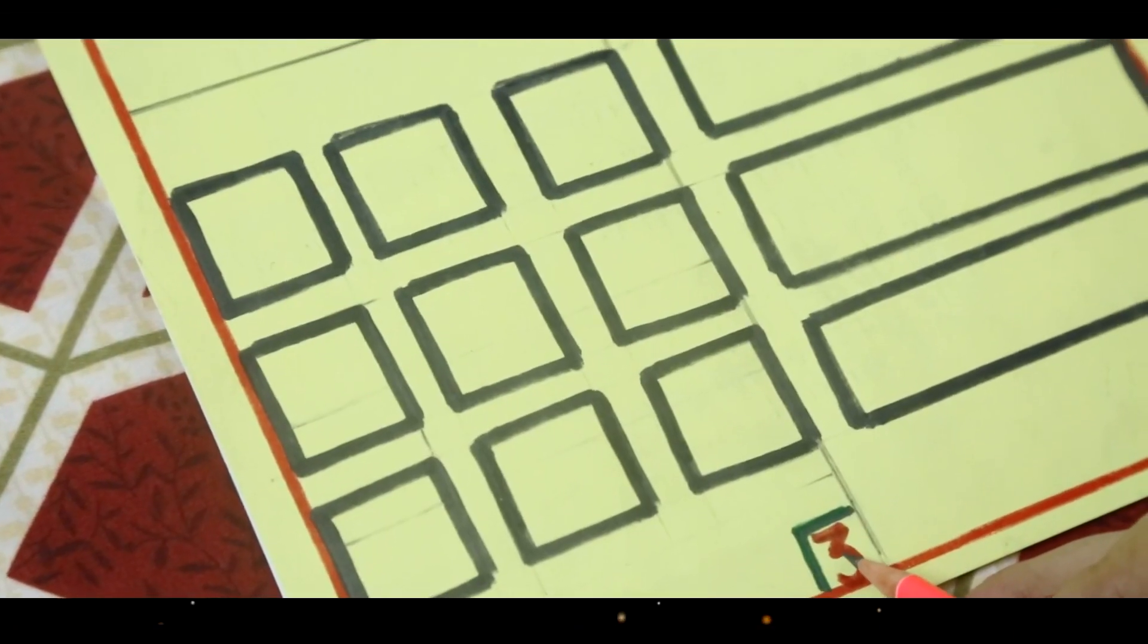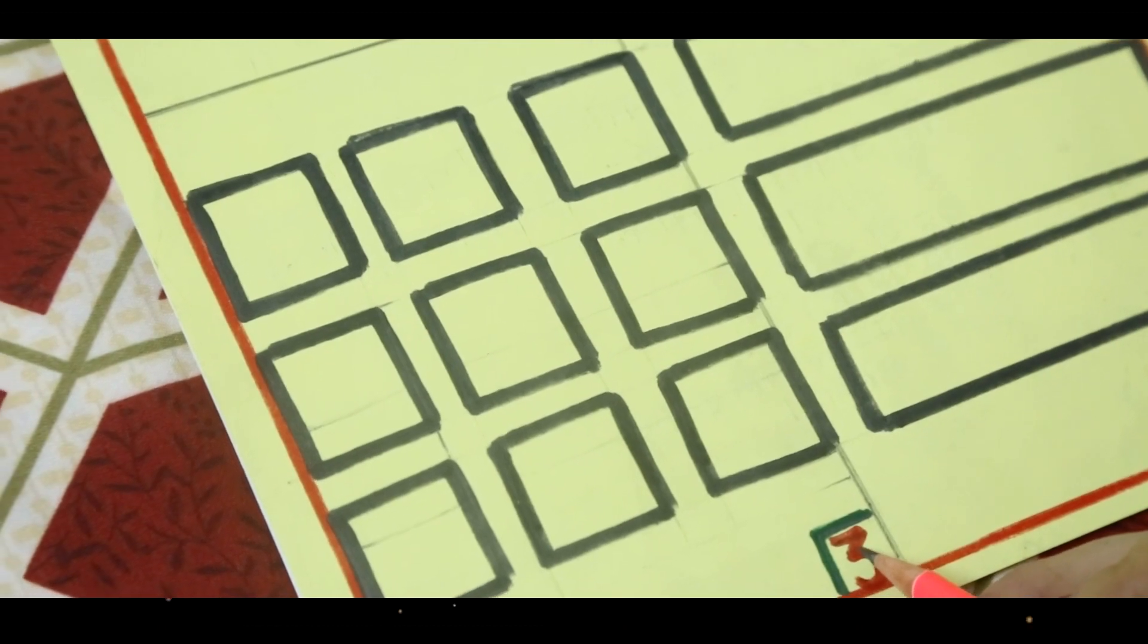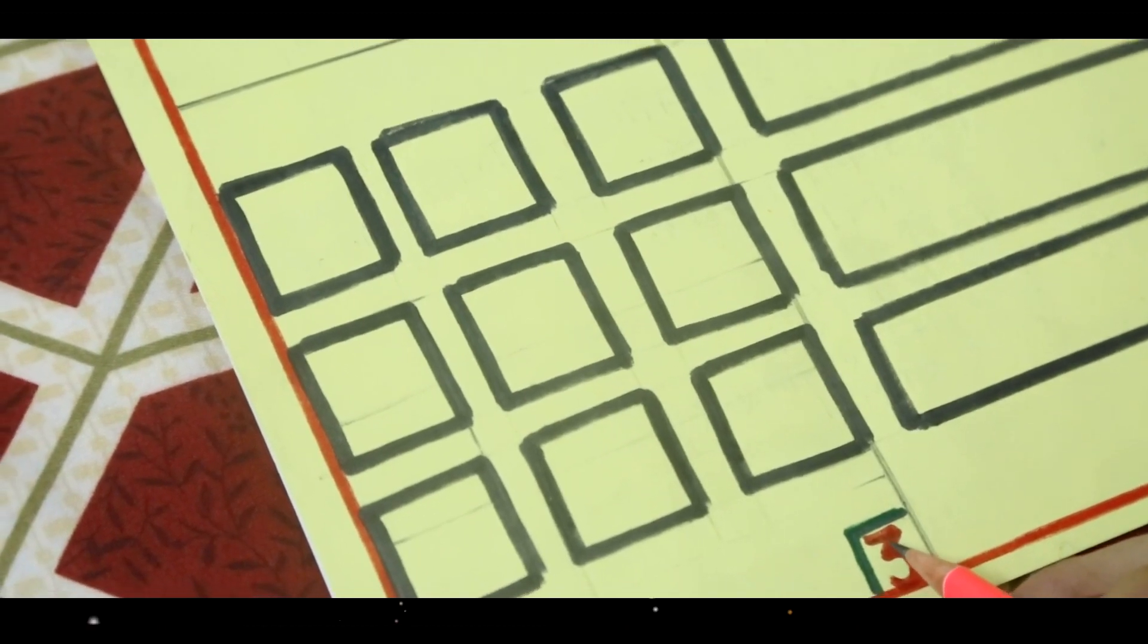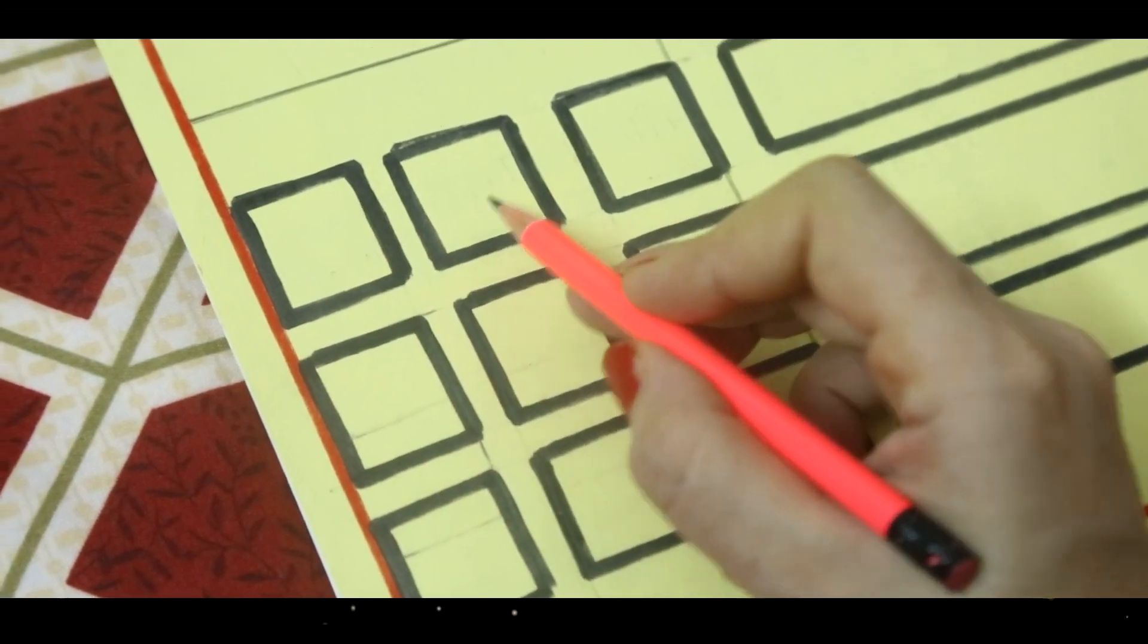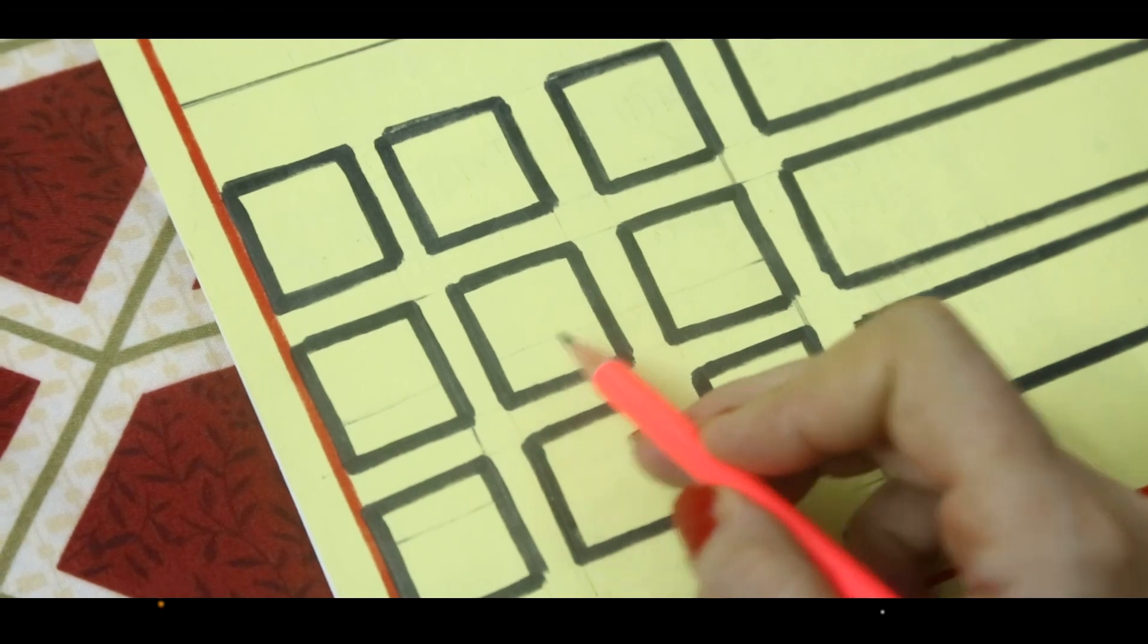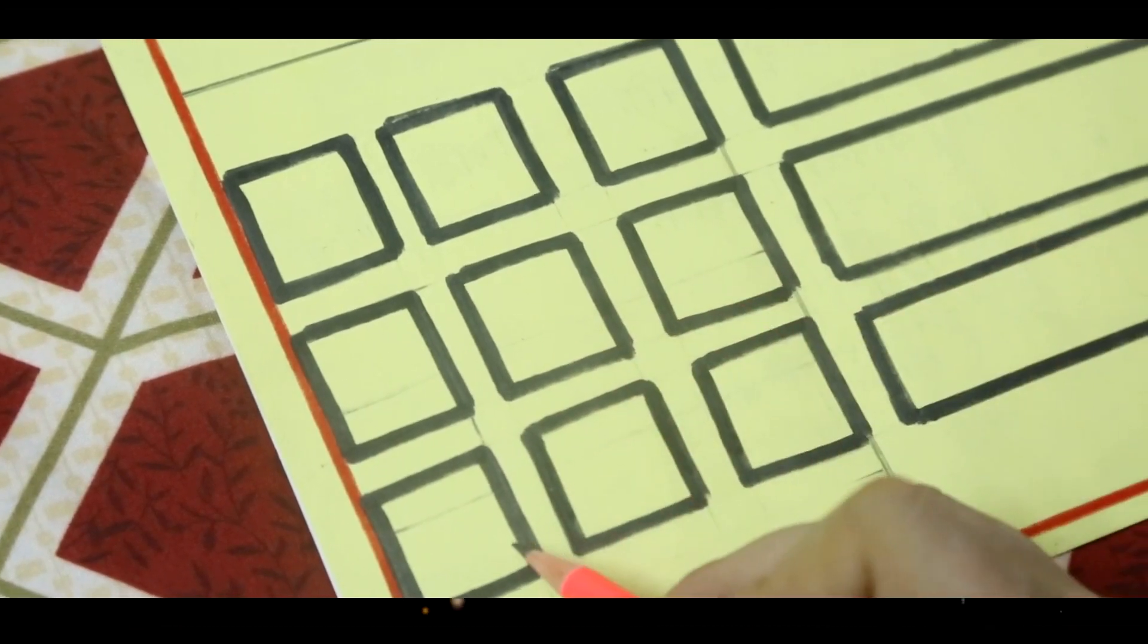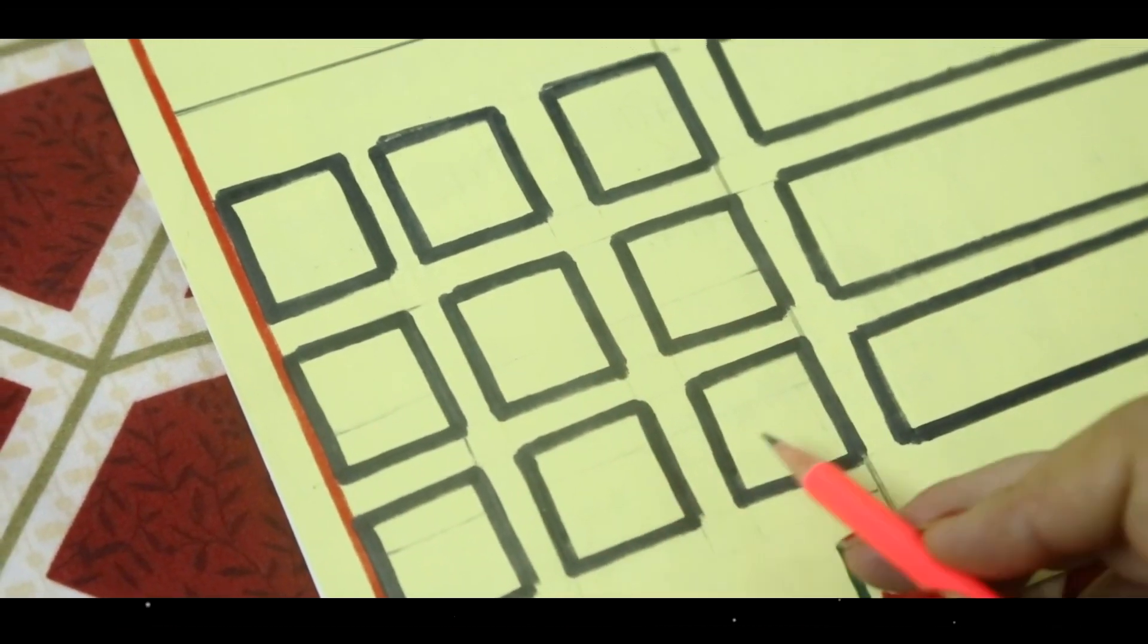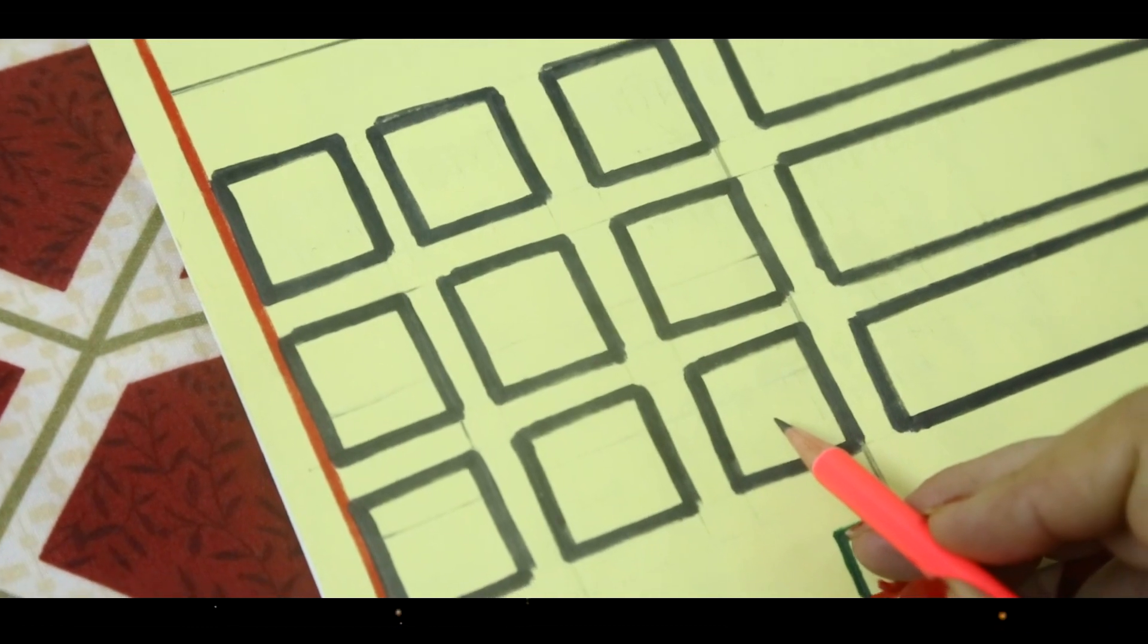In group three, we have squares. Let's count with me squares. One, two, three, four, five, six, seven, eight, nine. Nine. Nine squares.